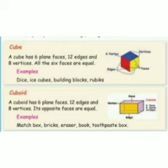Next, cuboid. Cuboid has 6 faces, 12 edges, and 8 vertices. Its opposite faces are equal. Example: matchbox, bricks, eraser, book, toothpaste box.